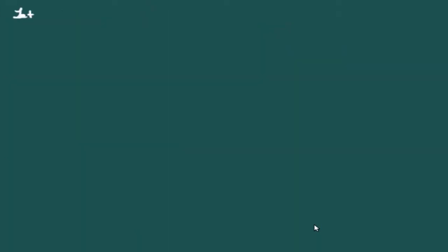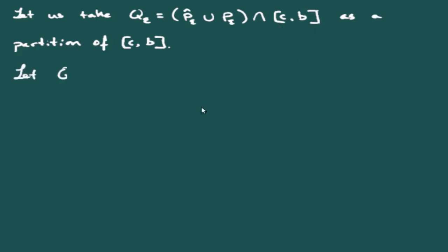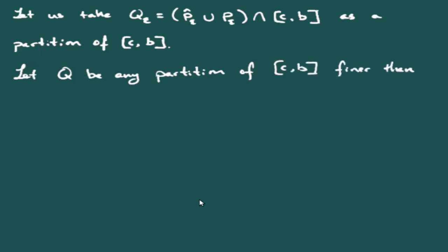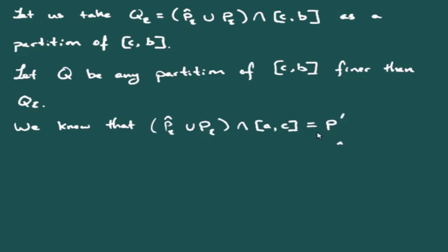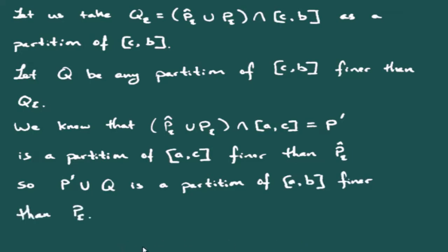Take Q_ε = (P̂_ε ∪ P_ε) ∩ [C, B], which is a partition of [C, B]. For any partition Q of [C, B] finer than Q_ε, the set (P̂_ε ∪ P_ε) ∩ [A, C] gives a partition P′ of [A, C] finer than P̂_ε, and P′ ∪ Q is a partition of [A, B] finer than P_ε.